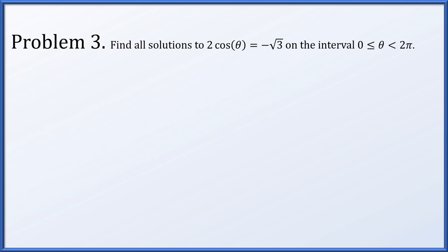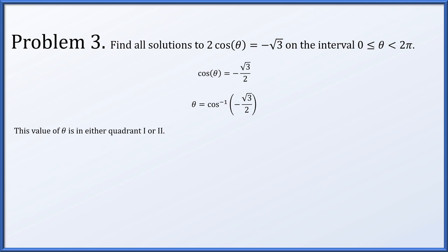In problem 3, we find all solutions to 2 times cosine of theta equals minus root 3 on the interval from 0 to 2 pi, including 0 but not 2 pi. Dividing by 2 gives cosine of theta equals minus root 3 over 2. Taking an arc cosine, theta may equal arc cosine of minus root 3 over 2. Since arc cosine has range from 0 to pi, and the cosine is negative, this is a quadrant 2 solution.